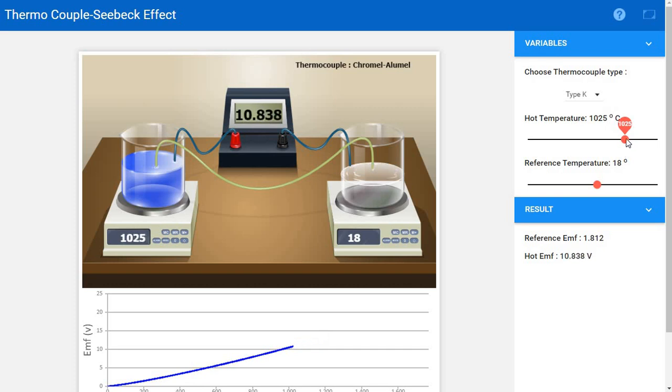With this experiment, we can know that if there is a difference in temperature between two dissimilar metals, the EMF is generated. There is Seebeck voltage generated. We can plot how much, for how much temperature difference, how much voltage is generated. This is thermocouple Seebeck effect. Thank you all. Nice day.